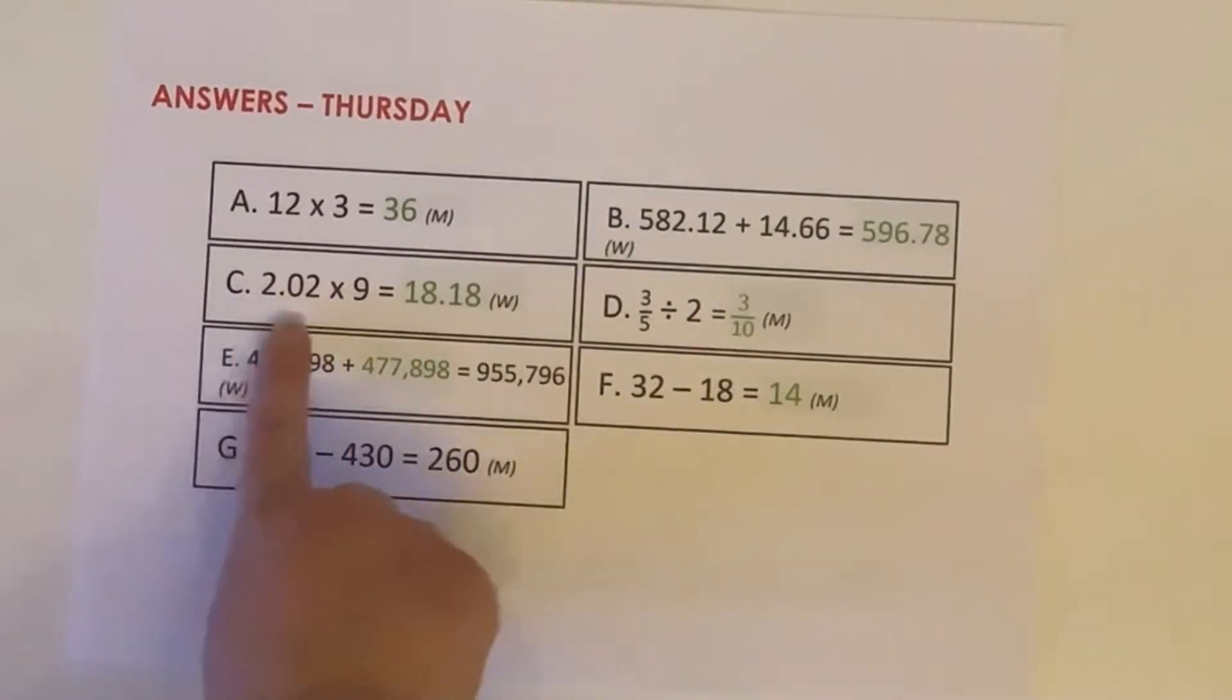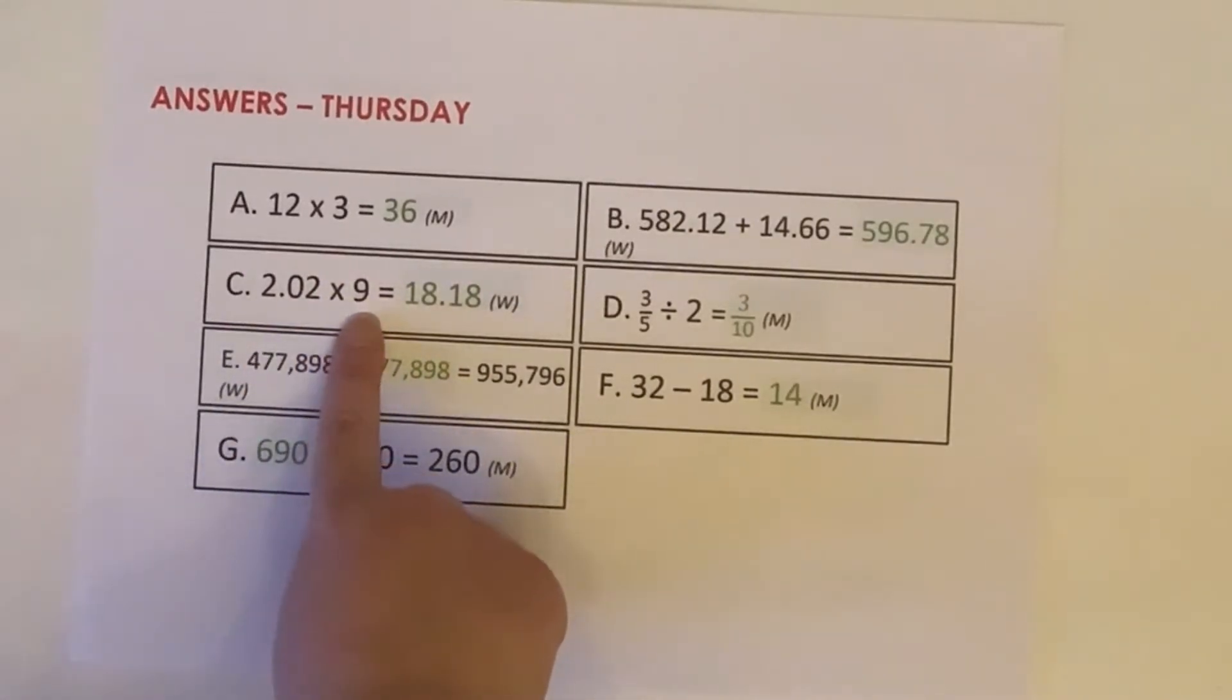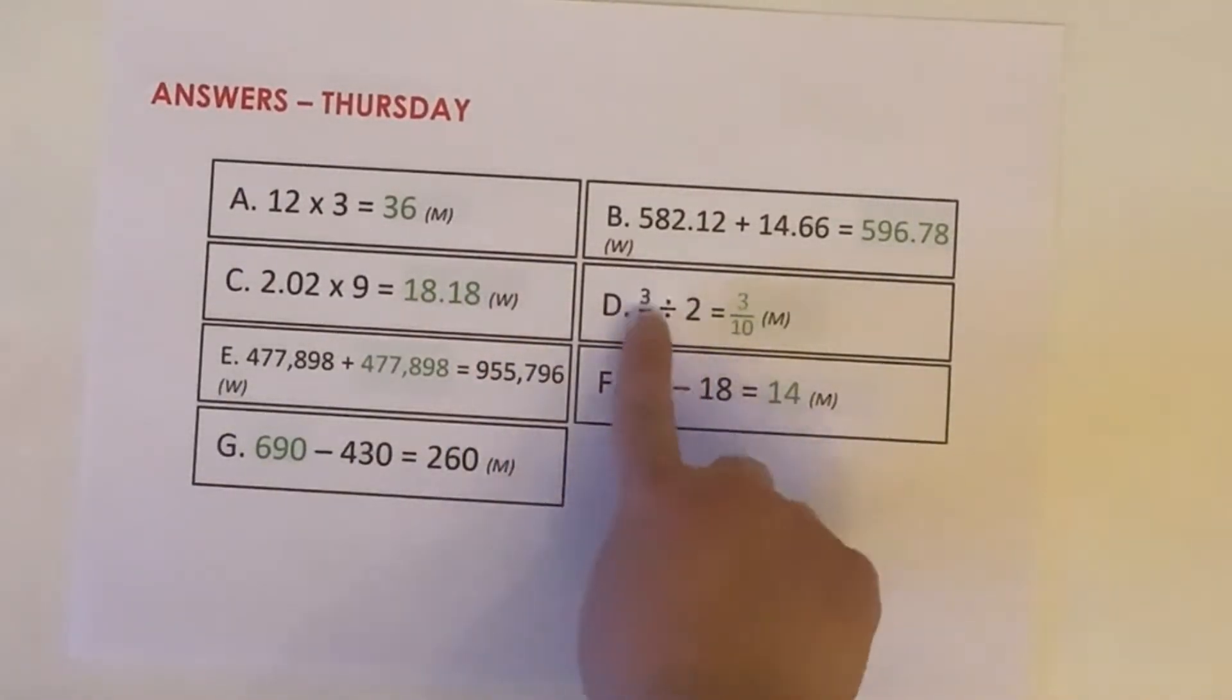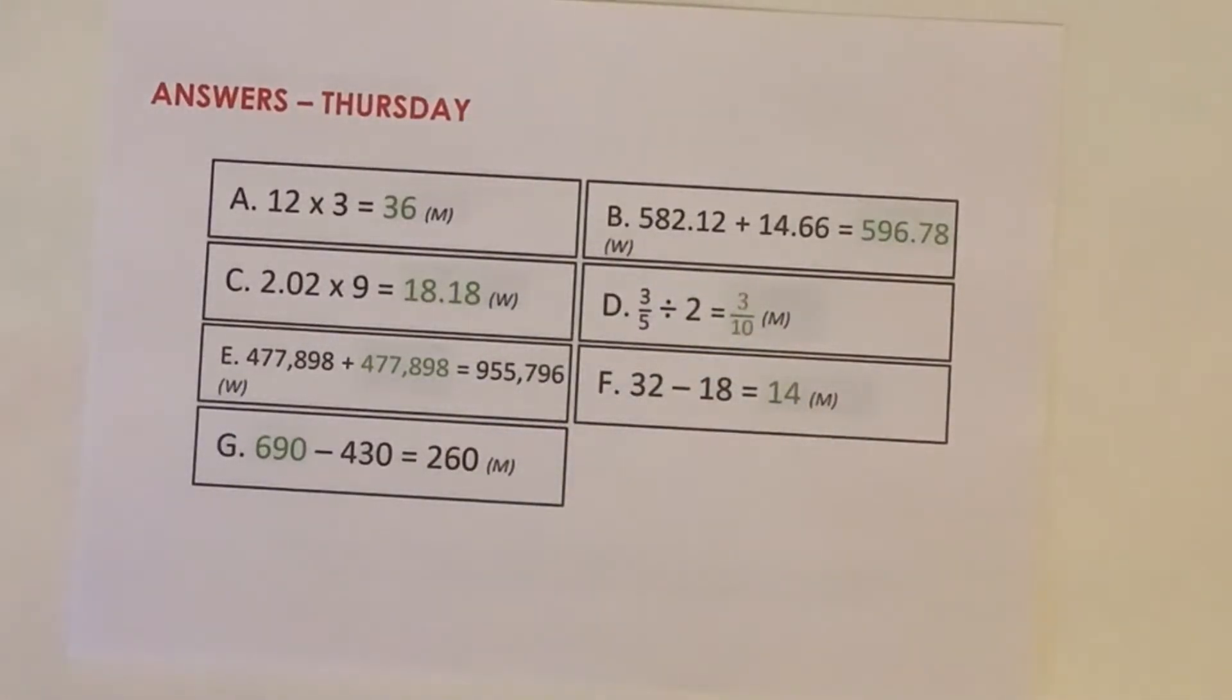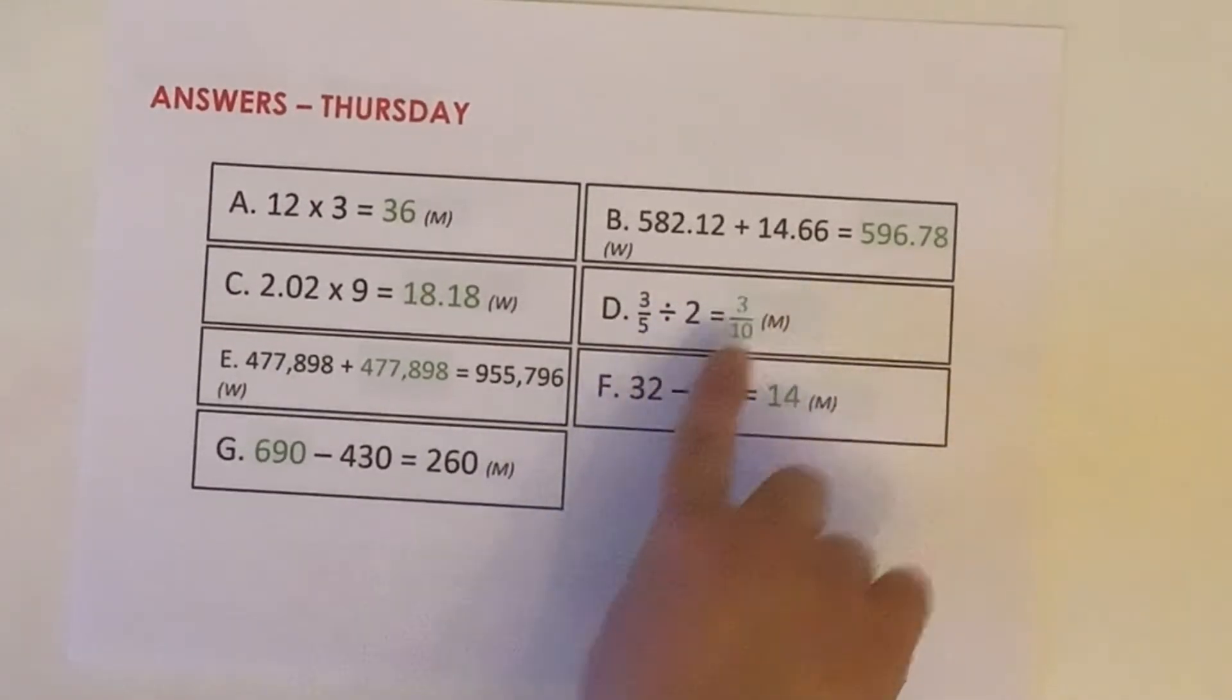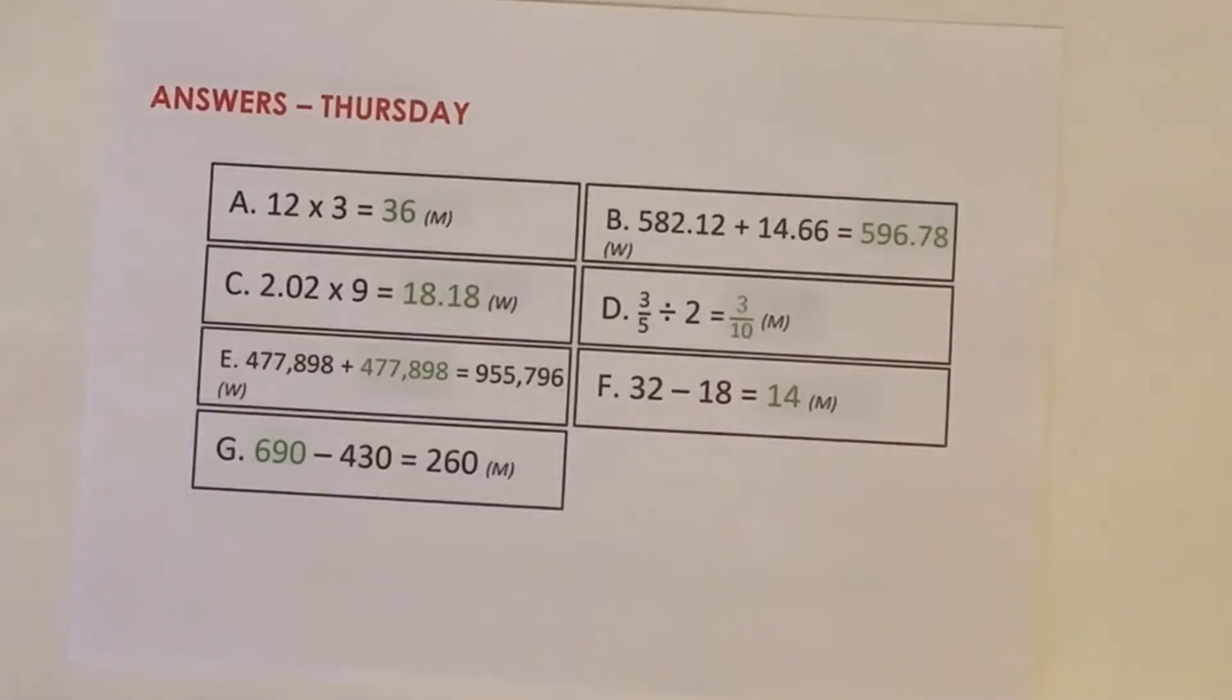So just very quickly for C, where we had 2.02 multiplied by 9, it's really important if you use the written method to write this out, that you aligned your digits accurately, thinking about the place value. And for D, 3 fifths divided by 2, remembering there you can times the 2 by the denominator to give you 3 tenths. And 3 tenths you can't simplify, so 3 tenths is already in its simplest form.